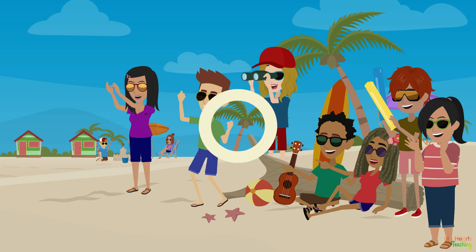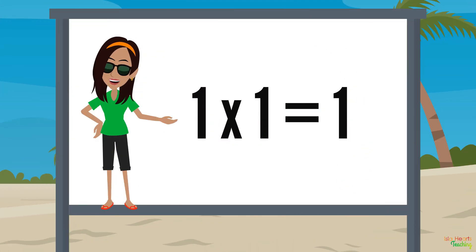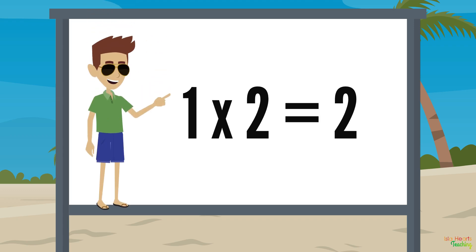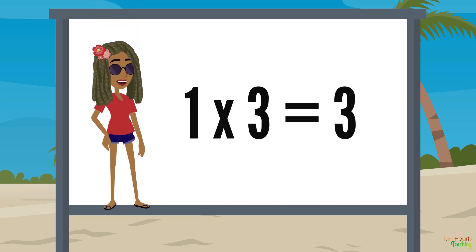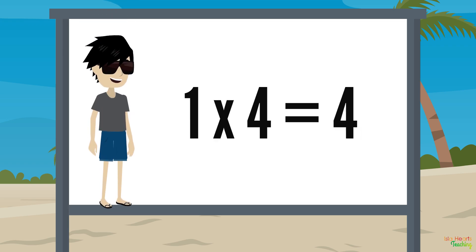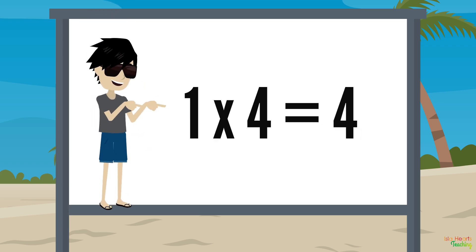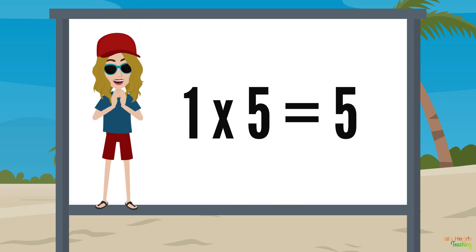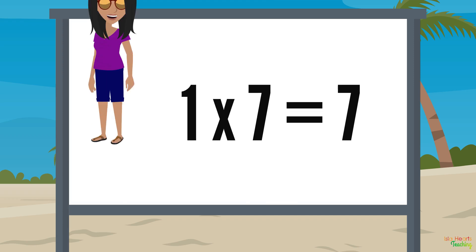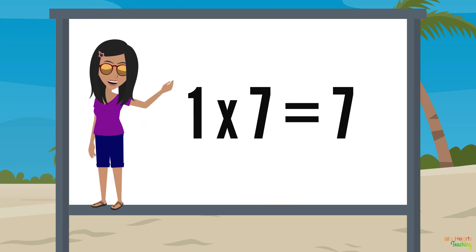Let's sing again. One times one equals one. One times two equals two. One times three equals three. One times four equals four. One times five equals five. One times six equals six. One times seven equals seven.